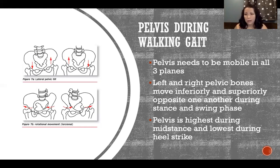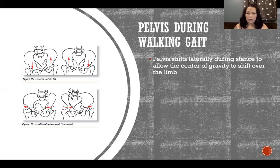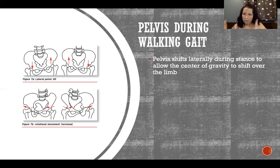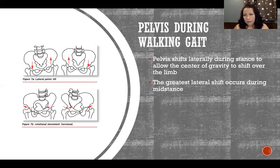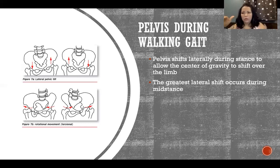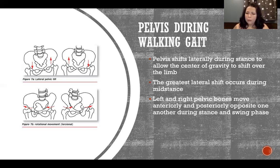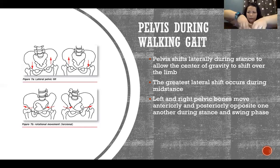Pelvic drop — where the pelvis drops too low on the swing side during mid stance — indicates a weak gluteus medius on the stance side. The pelvis should reach its lowest point at heel strike when the limb is in front of the body. The pelvis also shifts laterally during stance: as we shift body weight to the stance leg, the pelvis shifts laterally so the center of gravity is over the stance leg. The greatest lateral shift occurs during mid stance. Additionally, the left and right pelvic bones move anteriorly and posteriorly opposite one another during stance and swing phases, as the limbs move forward and backward.